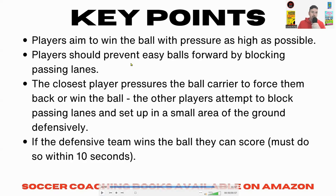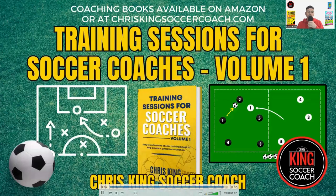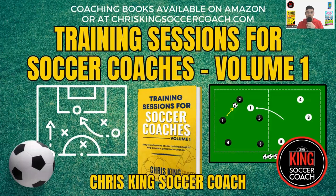The closest player pressures the ball carrier to force them back or to win the ball, and the other players attempt to block passing lanes. Make the small area of the ground defensive. Press up. Don't worry about the other side of the ground. If the ball moves over there, your players adjust. If the defensive team wins the ball, they can score but must do so within 10 seconds. If you do win that ball up high, you want to score as quickly as you can before the other team can get organized in their defensive shape.